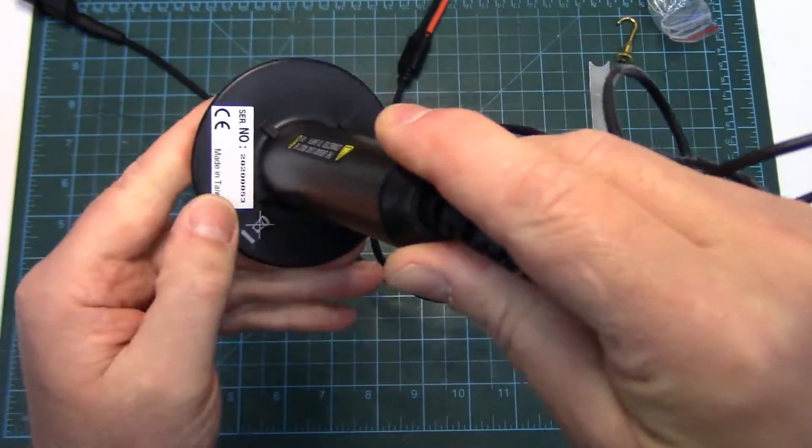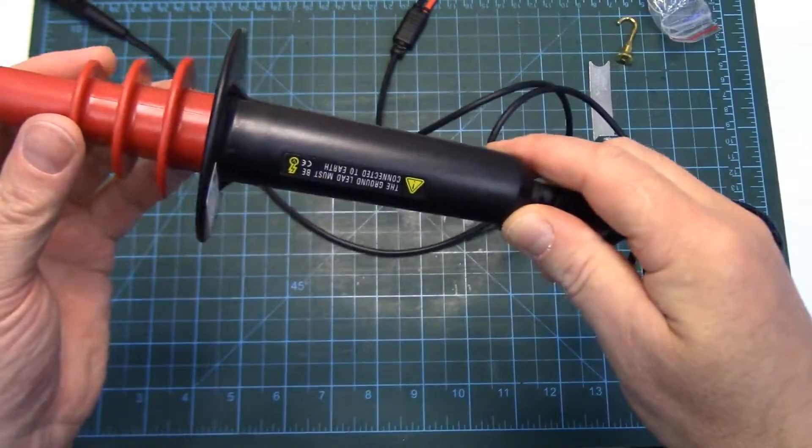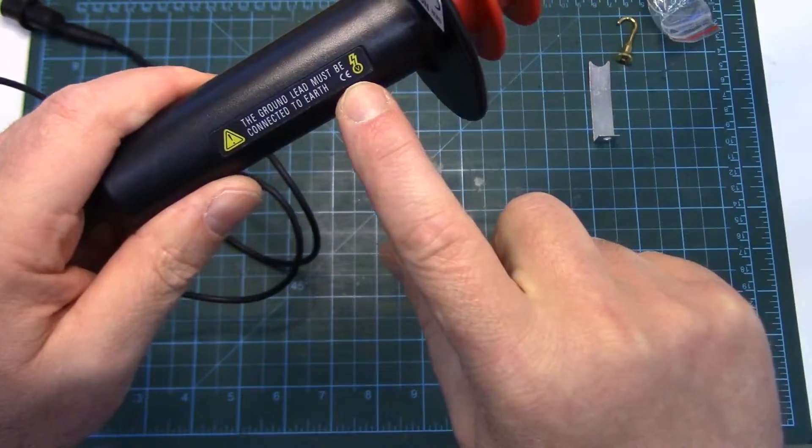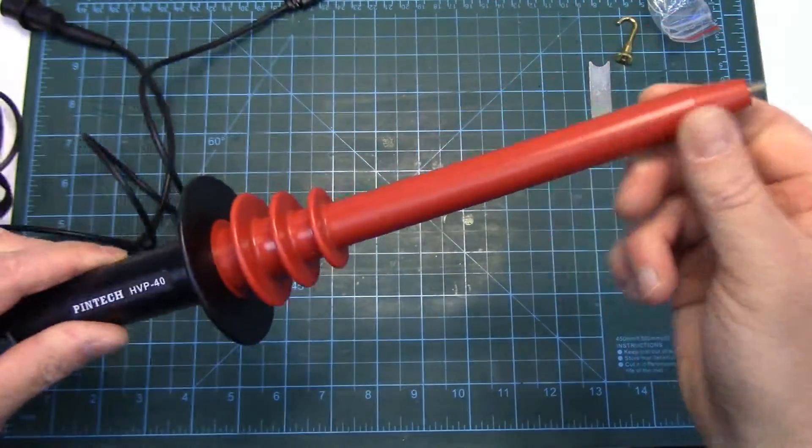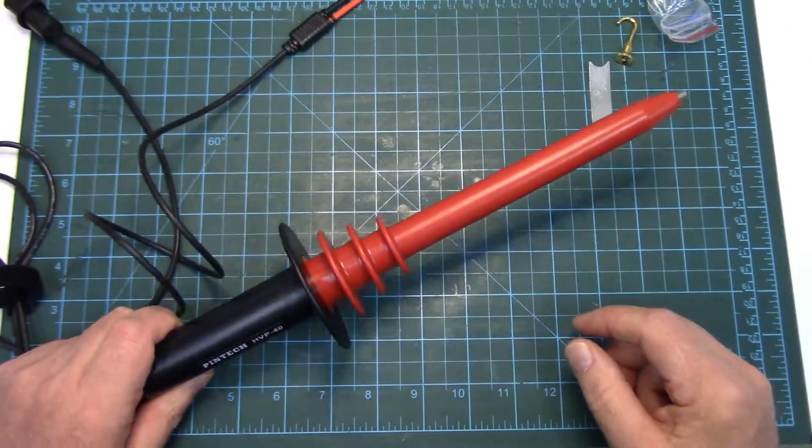Well, it's made in Taiwan, if that's important to anyone. It's got a serial number. And then just another warning, the ground lead must be connected to earth when you check stuff. Before we get into checking stuff, let's just make sure our meter is going to work with this.